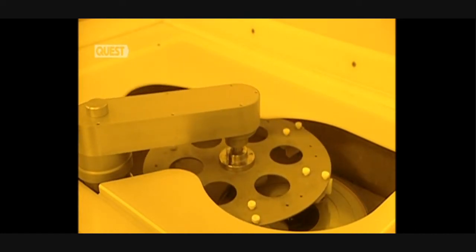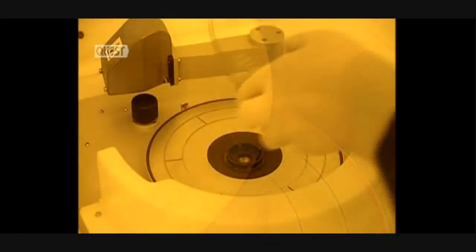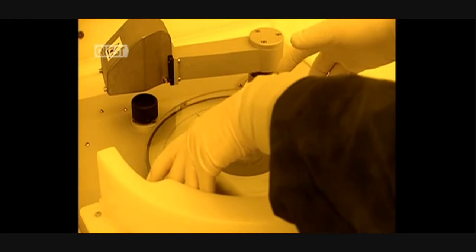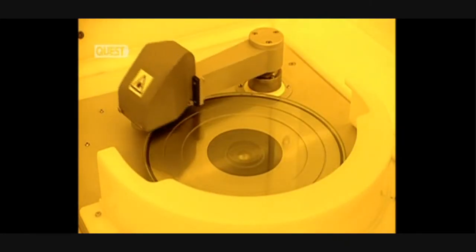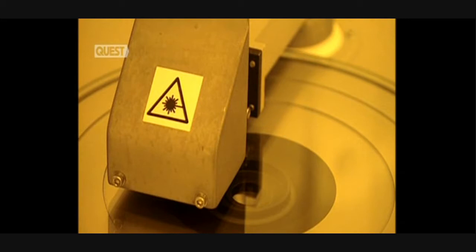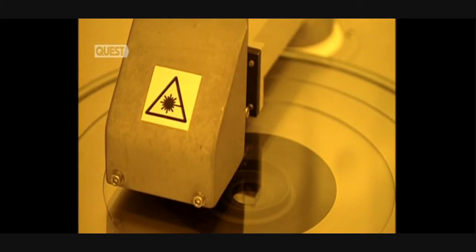Compact discs are copies made from an original glass master disc. Now the real work begins. A thin plate of glass has the chosen information, in this case music, written onto itself using a laser beam.